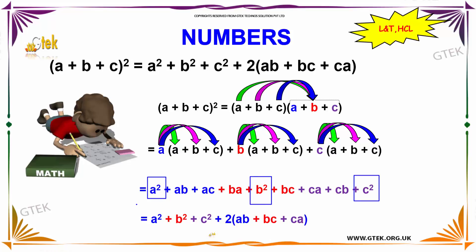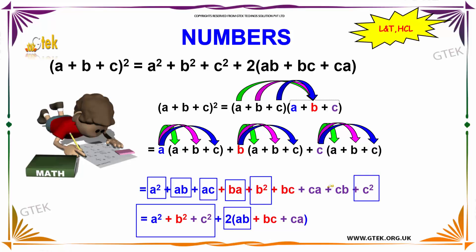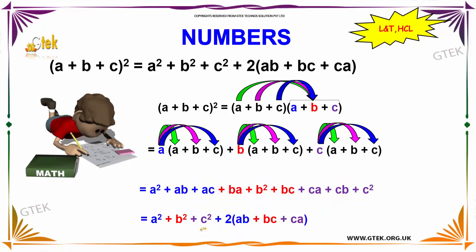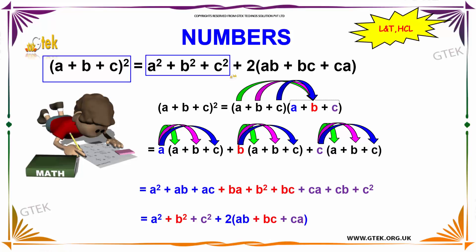Adding all values we get: a square plus b square plus c square. Then ab and ab give 2ab. ac and ca give 2ac. bc and cb give 2bc. So the formula is: a plus b plus c whole square equals a square plus b square plus c square plus 2 into ab plus bc plus ca.